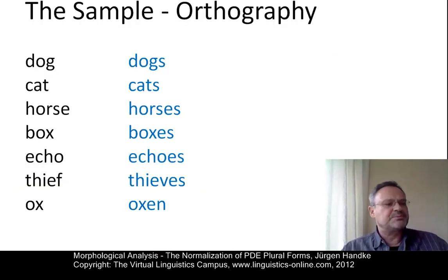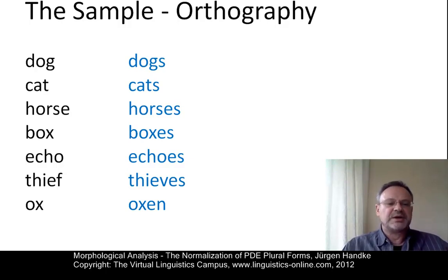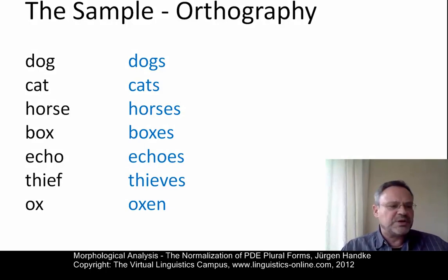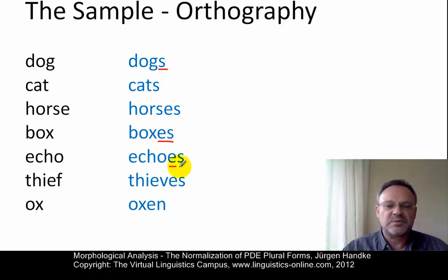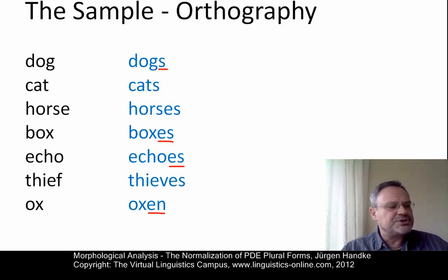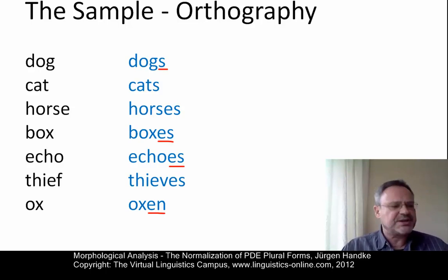Here are my examples presented orthographically: dog-dogs, cat-cats, horse-horses, box-boxes, echo-echos, thief-thieves, ox-oxen. On the basis of an orthographical representation, we would have to postulate the following plural endings: a simple S, something like ES, and something like EN if we compare the plural with the singular. So using orthography, it seems as if there are different conditions under which you add a simple S versus ES, and then, maybe as a special case, EN.